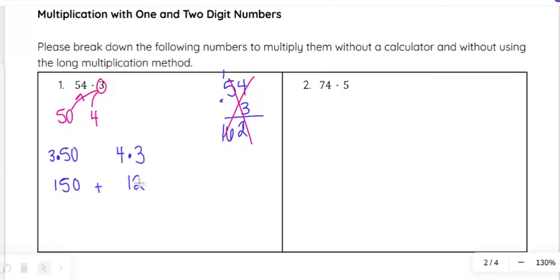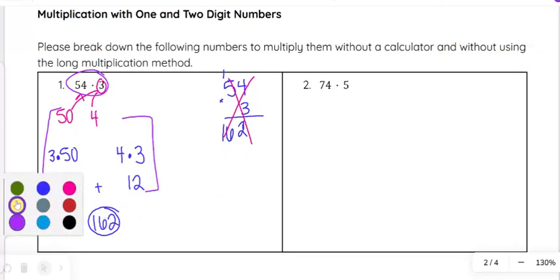Then we can add 150 and 12. 150 plus 10 is 160, and then add another 2 and you get 162. You won't necessarily write out this work, but in my head, if I look at 54 times 3, I would probably do 50 times 3 in my head and get 150, and then say 4 times 3 is 12. Add those together and you get 162. That is a way to make that a little bit quicker without having to write out the long multiplication method.